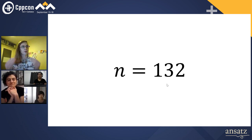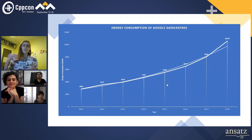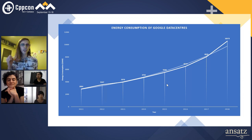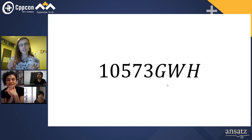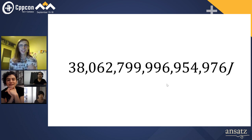Since we're C++ programmers, we're always thinking about scalability. What's more scalable than Google data centers? Here's a graph of the energy consumption of Google data centers over time. Say we wanted to produce enough energy to power all of Google's data centers for 2018 in a single slap — how fast would we have to slap one of Google's power stations? The Google data centers took 10,573 gigawatt hours of energy in 2018, which is equivalent to 38 quadrillion joules.